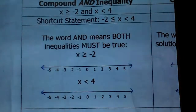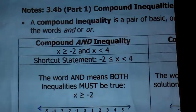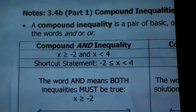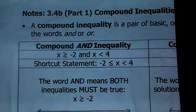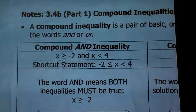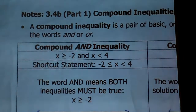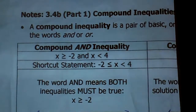Hi 7th graders, it's time for 3.4b part 1. I actually separated 3.4b into two parts. Part 1 is compound inequalities and part 2 is absolute value inequalities — that'll be your next note set. So you only need to do part 1 for today.